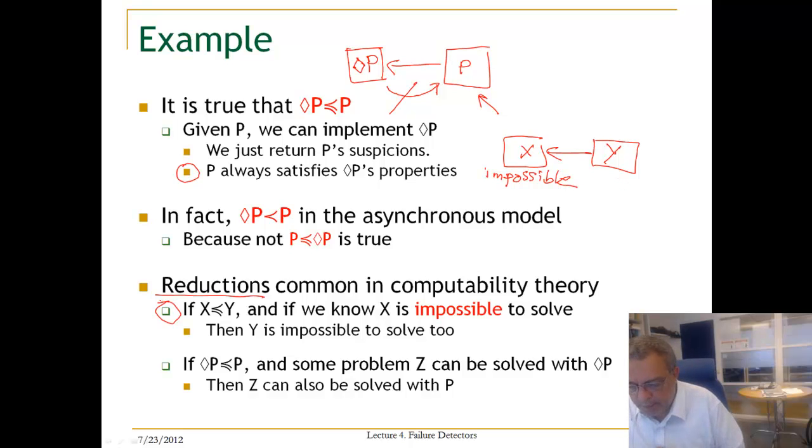Here is the other example. We know that P can implement diamond P, and for some problem also we know that diamond P can implement Z, then of course P can be used to implement Z.